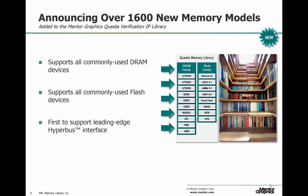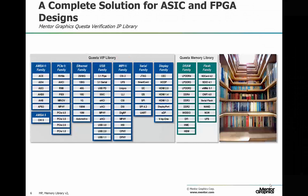And this is our new memory library. It provides fast and accurate models of over 1,600 memory devices. It supports all commonly used DRAM and flash protocols. On DRAM it supports LPDDR2, 3, 4, DDR2, 3, 4, WDIO, HMC, HBM. It also supports the flash protocols SD, SDIO, eMMC, ONFI, Serial NAND, NOR and UFS. And it also includes leading edge protocols like HyperBus, which is a new leading edge flash protocol. Together, the protocol and memory libraries mean that the Cruster VIP library provides a complete solution for all your ASIC and FPGA verification needs.